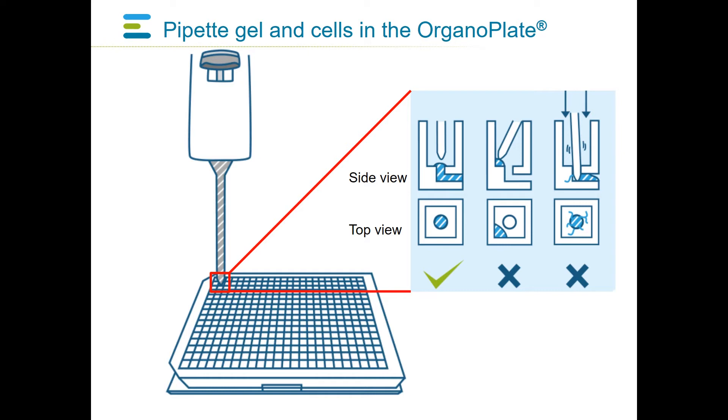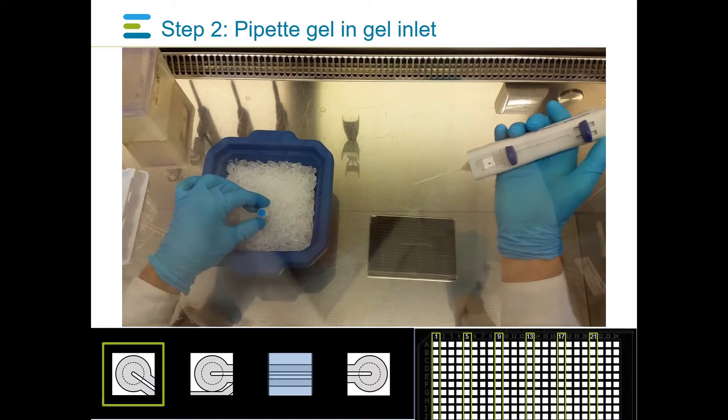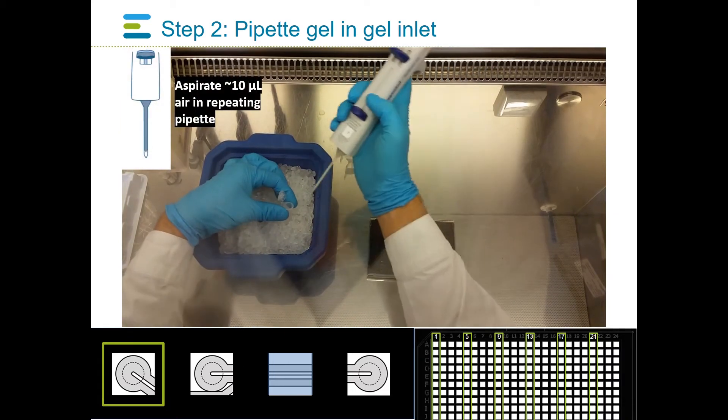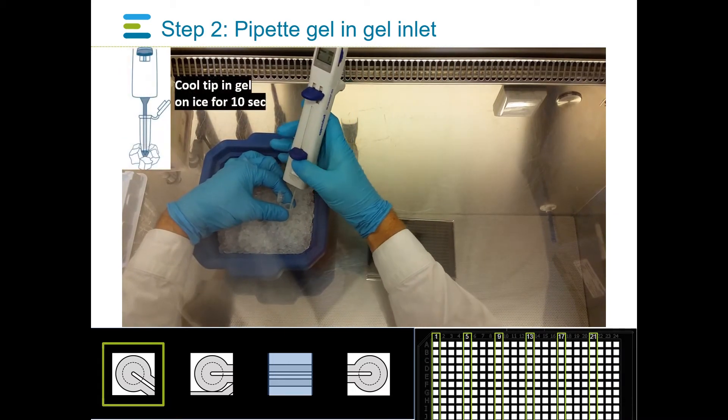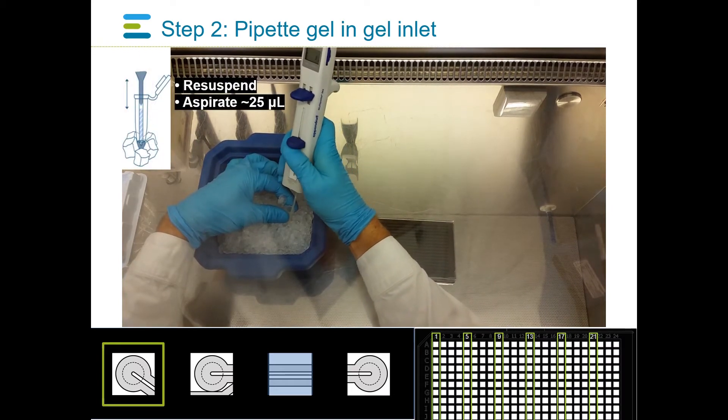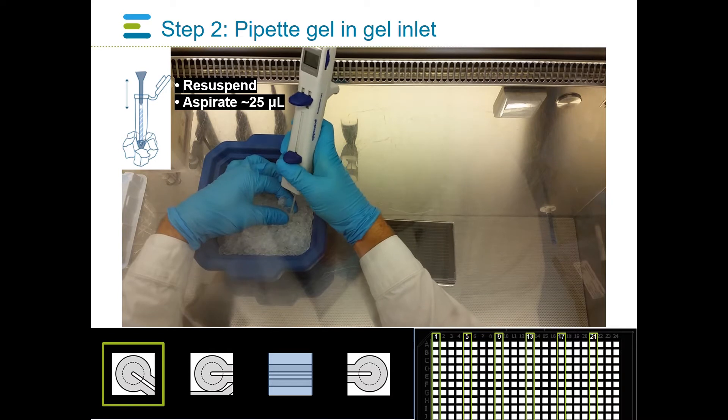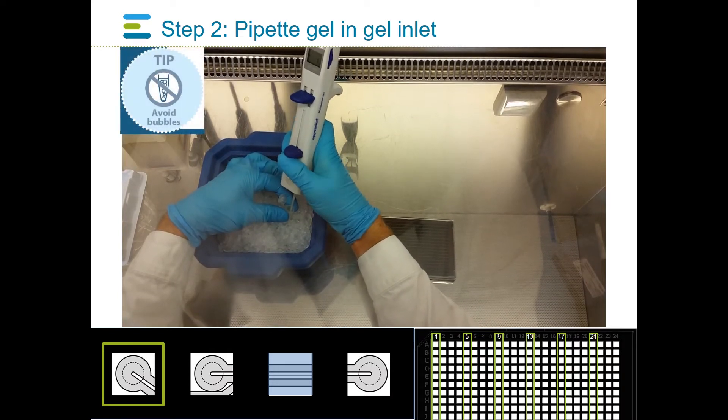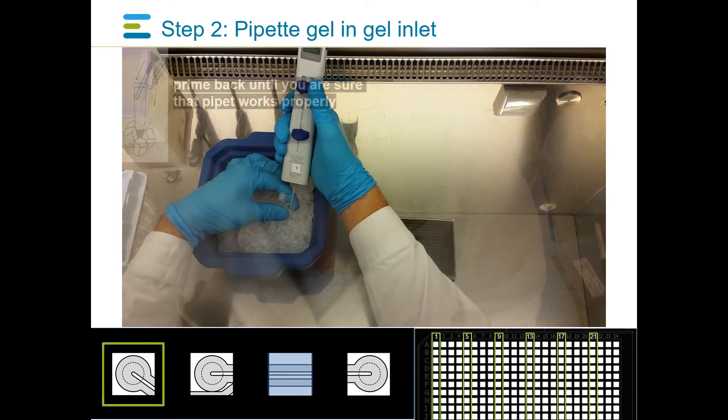Avoid exerting excessive pressure on the glass bottom of the Mimetas organoplate, as this might break the glass. When handling ECM gel, take care of keeping the Eppendorf tube on ice to prevent early gelation. Homogenize the gel by pipetting up and down several times, while avoiding making bubbles. Take up approximately 25 microliters of gel and prime until dispensing is observed.